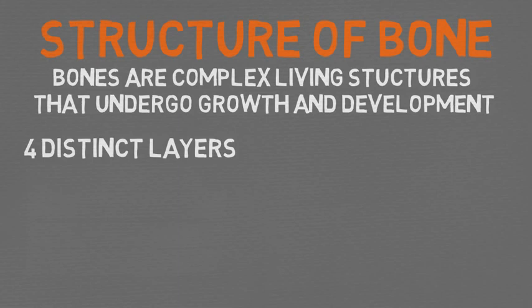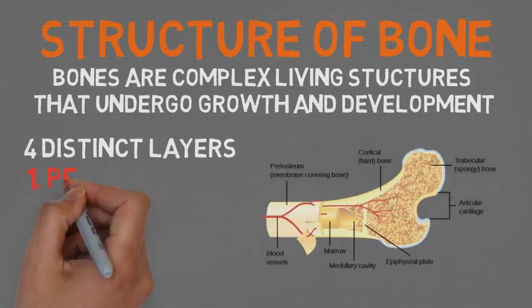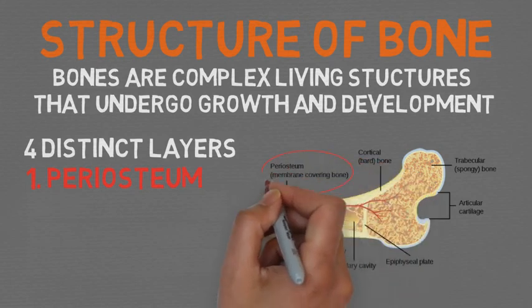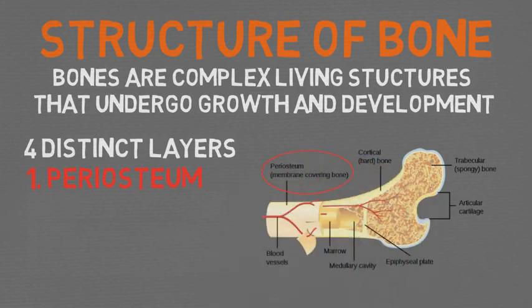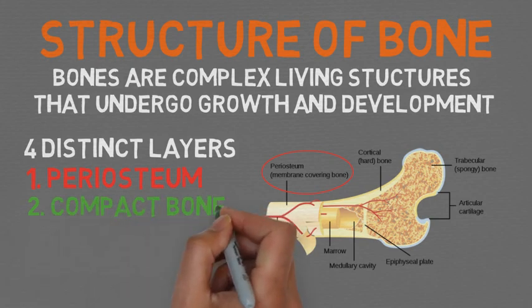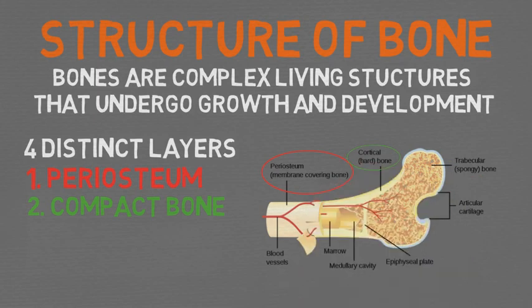Looking at the four layers of bone: the first is the periosteum — a membrane that covers the outer surface of all bones, except at the joints of long bones. The second layer is compact bone, also called cortical bone, which lies beneath the periosteum. It is a denser material used to create much of the hard structure of the skeleton.